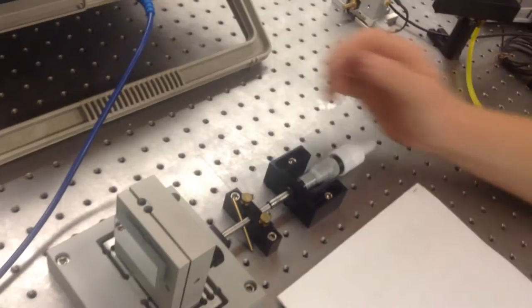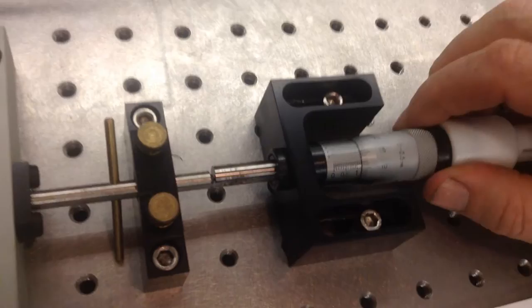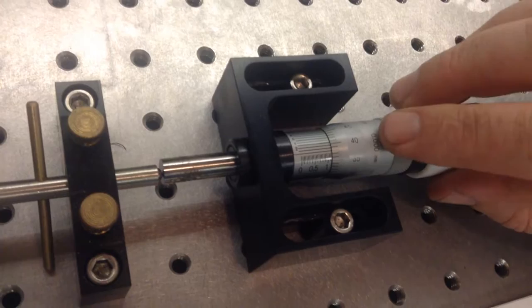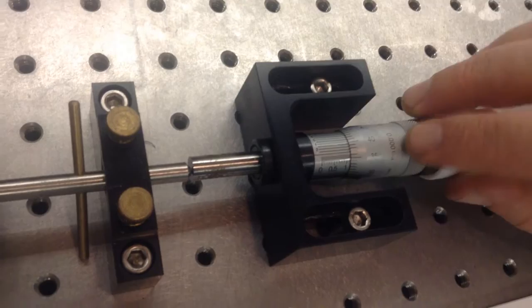This is a $600 micrometer and the reason it's $600 is because you'll see here it says 0 to 2.5 millimeters and then it has this very intriguing 0.0001 millimeters. What could that possibly mean?